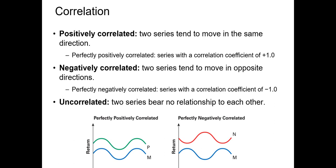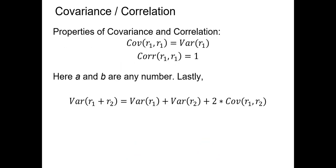Positive correlation indicates two series tend to move together in the same direction; negative correlation indicates they are likely to move in opposite directions. In the bottom left-hand corner of our screen, two random variables are perfectly positively correlated — a rise in random variable P will always have a comparable rise in random variable M. With perfectly negatively correlated random variables, shown in the bottom right, an increase in N will always have a corresponding decrease in M. Perfectly negatively correlated assets are always on our lookout since we can use that negative correlation to achieve a guaranteed return with no risk.